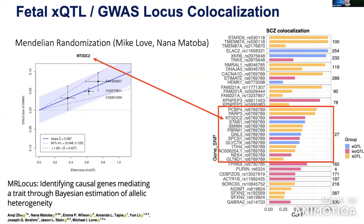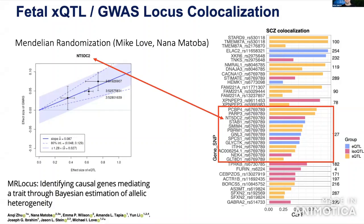In many cases, a single variant co-localizes with QTLs from many genes in a locus, possibly tagging a structural variant or haplotype. We can use techniques from Mendelian randomization, developed by Mike Love's lab in collaboration with our collaborators, to look at how allelic heterogeneity may provide additional support for individual genes in the locus.